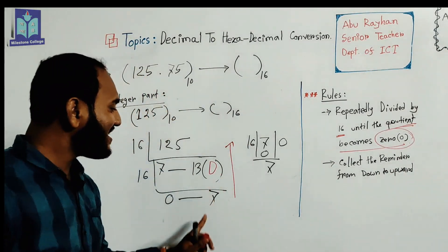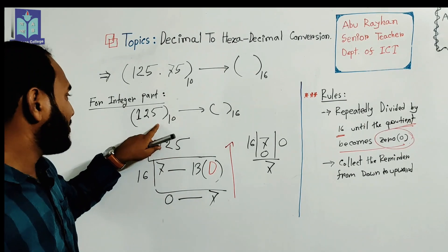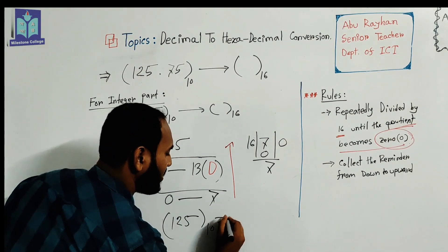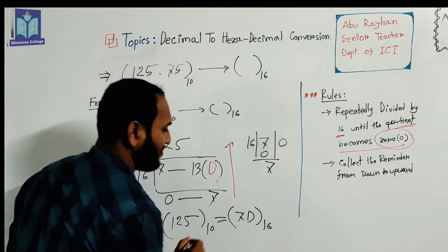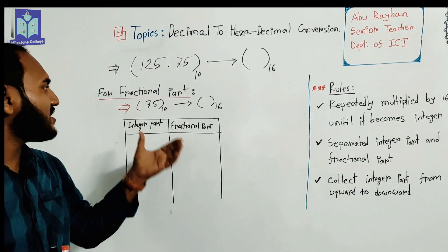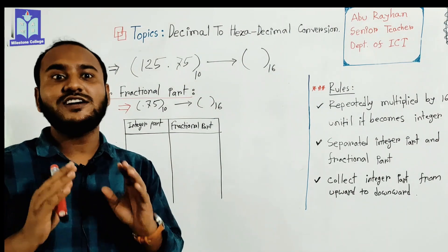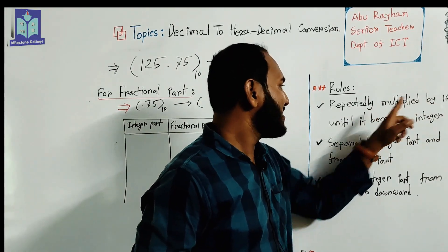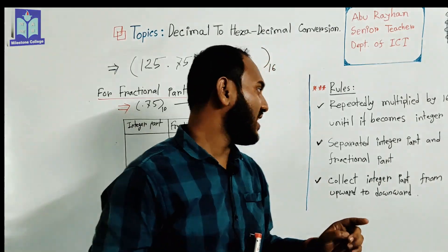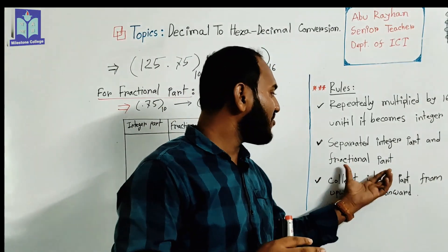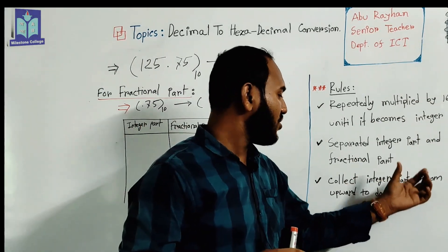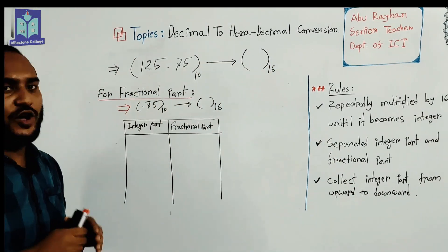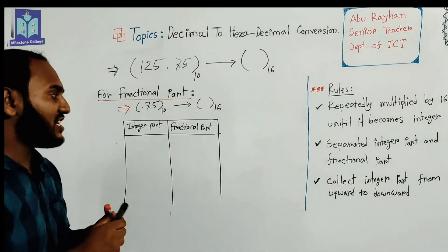The result of hexadecimal for this decimal number: 125 decimal equals 7D hexadecimal. Now we want to convert the fractional decimal number into hexadecimal. The rules are: repeatedly multiply by base 16 until the result becomes an integer; separate the integer part and the fractional part; and collect the integer part from upward to downward.